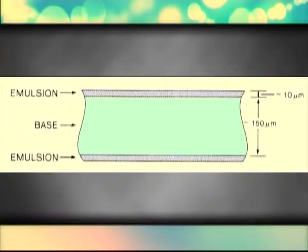Film Structure: Conventional film is layered — the active component is an emulsion layer coated onto a base material. Most film used in radiography has an emulsion layer on each side of the base so that it can be used with two intensifying screens simultaneously. Films used in cameras and in selected radiographic procedures such as mammography have one emulsion layer and are called single emulsion films.